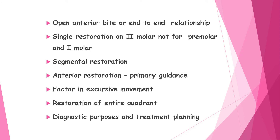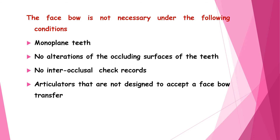The facebow is also used in anterior bite or end-to-end relationship cases, simple restorations on second molars but not for premolars and first molars, segmental and anterior restorations where it is the primary guidance, in cases involving excursive movement, restoration of anterior guidance, and for diagnostic purposes and treatment planning. However, the facebow is not necessary when cases involve plain teeth with no alterations of the occluding surface, when no interocclusal check records are used, or when articulators are not designed to accept a facebow transfer.